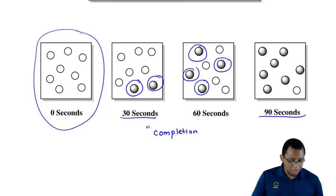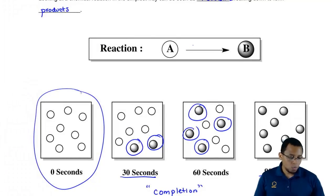When our reaction reaches completion, basically almost all of the reactants are gone and all we have are products. For reactions that go to completion, we have one single arrow going forward.